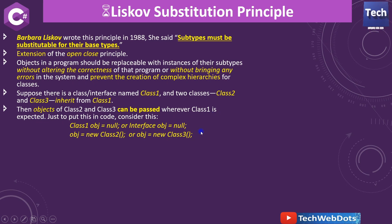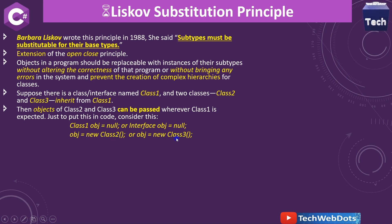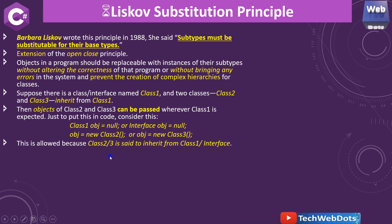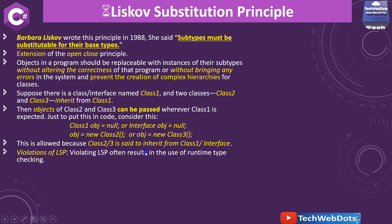In code form, we are creating an object — it can be null or it can be an interface, so either a class or an interface. In that object variable we can pass a new instance of subtypes — Class2 and Class3 — and this object can contain those instances. This is allowed because Class2 and Class3 inherit from the Class1 interface. This statement looks simple but it is not.